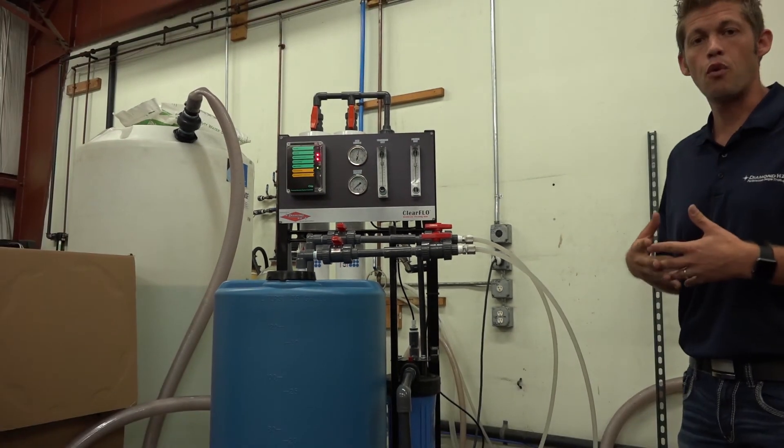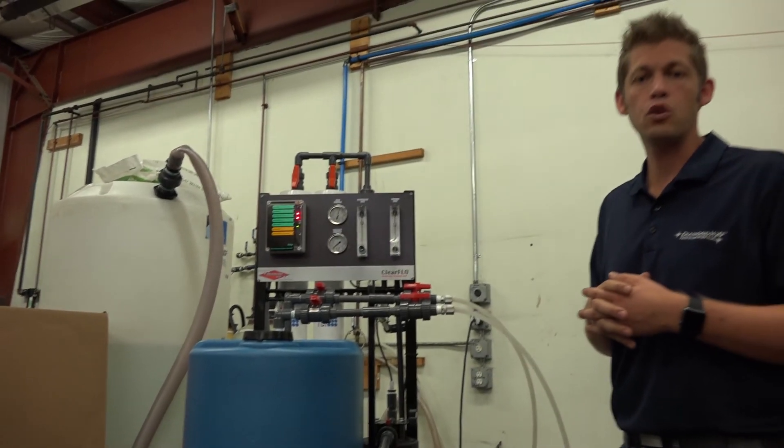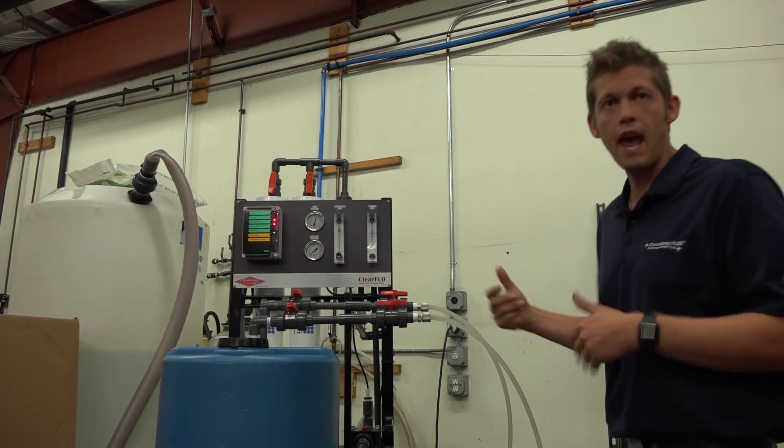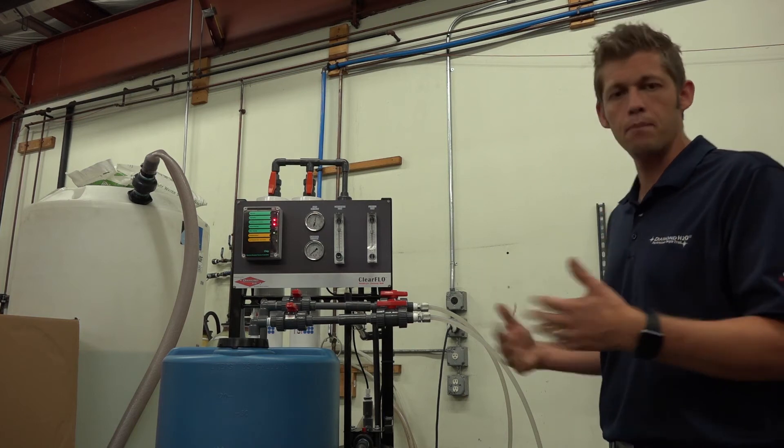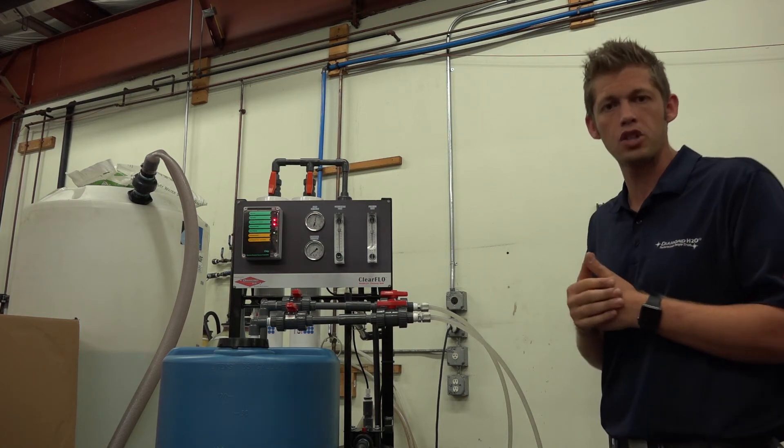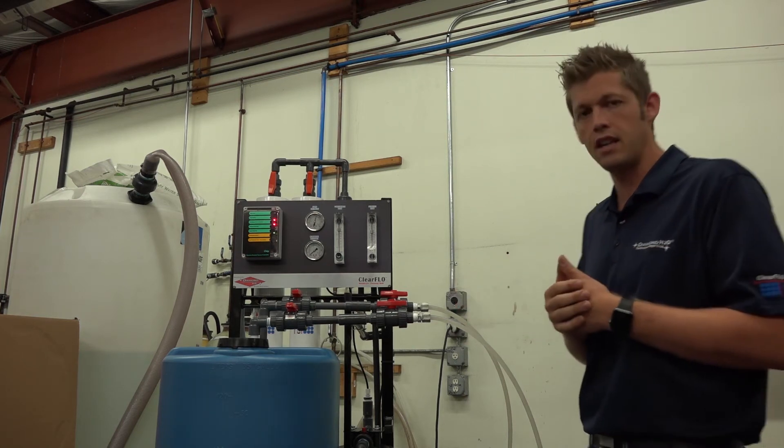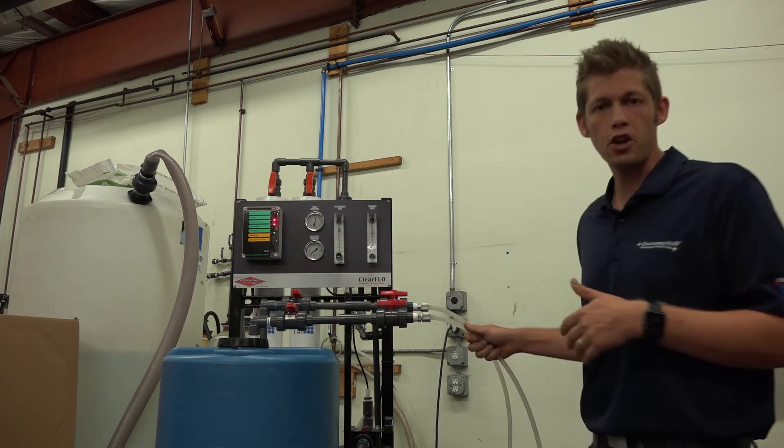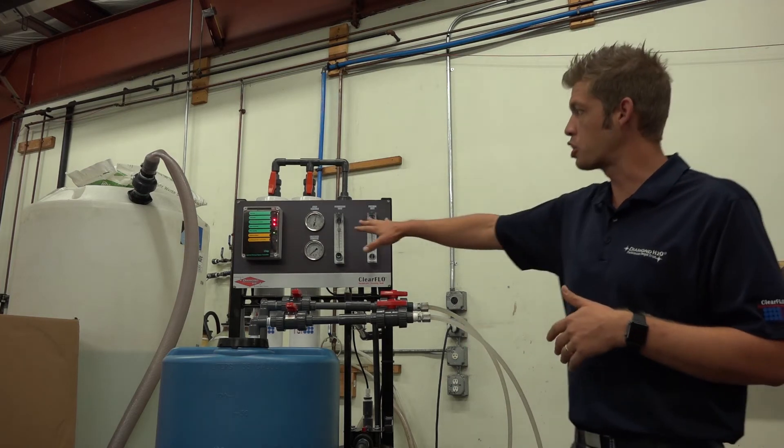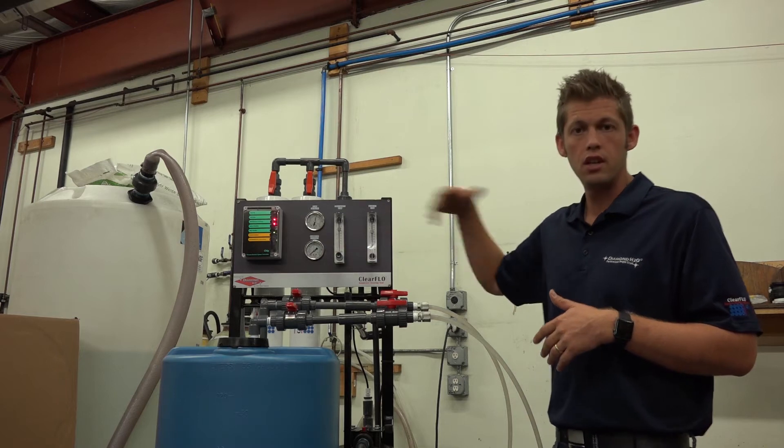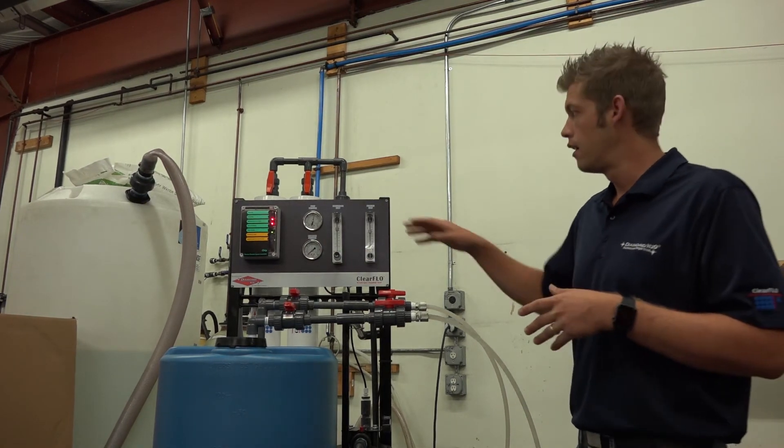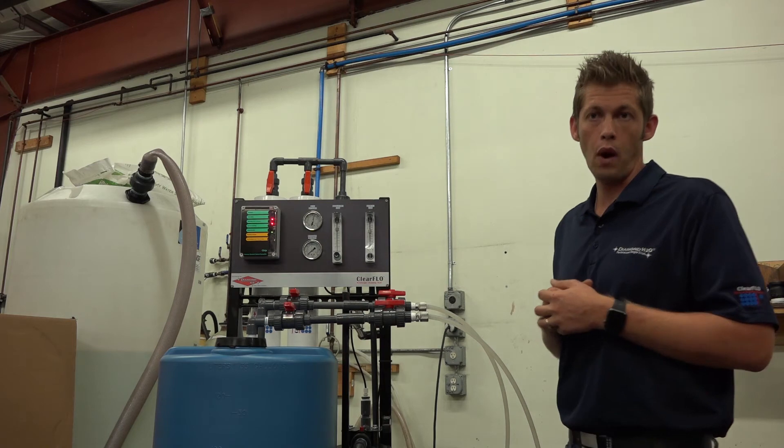Allow the system to run for 10, 15, 20 minutes. You can check the pH. Make sure the pH is coming within a range. That 7 range is ideal. Make sure that we flushed all the acid out of them. Also, you should notice a significant change in your quality of water and your flow rate.